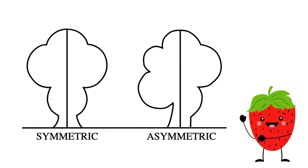Now you know that if something is symmetrical, it has symmetry and it's the same on both sides. And if something is asymmetrical, that means it is not the same on both sides. You should be so proud of yourself — I'll see you next time!